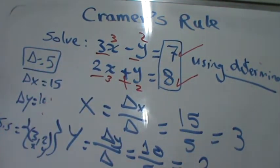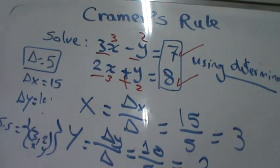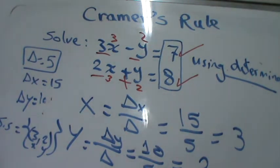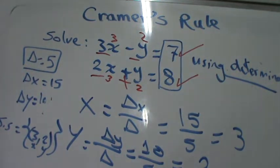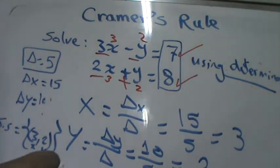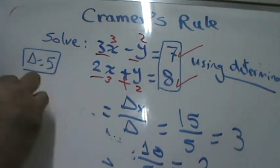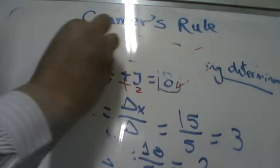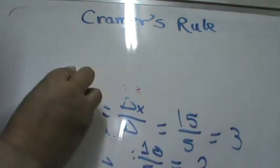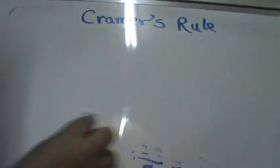Our solution is correct using the determinant. Note that the given equations here are in standard form — variables on the left side and constants on the right side. But if you have two equations written in different forms, you must rearrange them first.